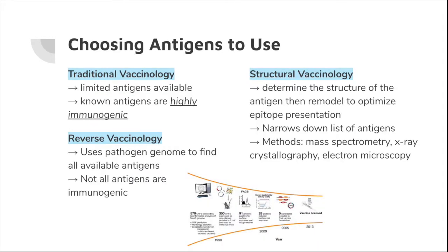There are three different ways to choose which antigens to use in a vaccine. Immunogenicity refers to the pathogen's ability to provoke an immune response in its host. For vaccines, we want an antigen that is highly immunogenic to create a stronger immune response. Traditional vaccinology has been around the longest and provides highly immunogenic antigens, however it is limited to the antigens we are familiar with. Reverse vaccinology was developed more recently and uses genome sequencing and analysis to sequence the pathogen's genome and find all available antigens, although most are not as immunogenic.